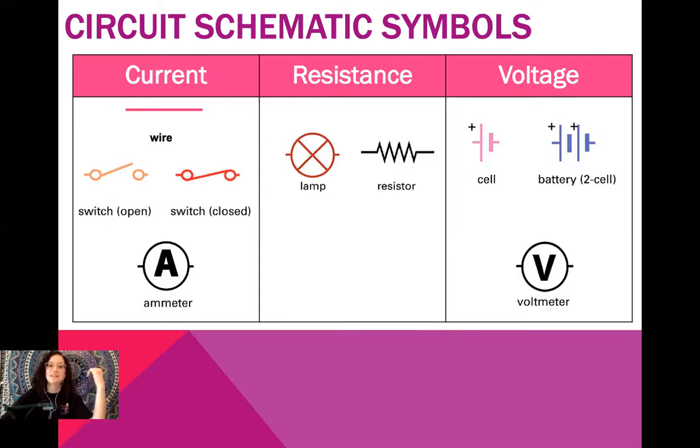These are our circuit schematic symbols. So we have different symbols to represent current, resistance, and voltage. So current, we've got a straight line for a wire. This is for a switch being open, and this is for the switch being closed. As you can see, just kind of like two little dots, and then the line either open, not touching it, or touching it to say that it's closed. And a circle with a capital A for an ammeter. Ammeter measures current. We use amps as the unit.